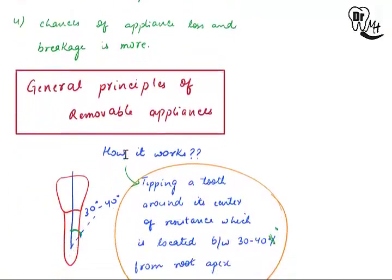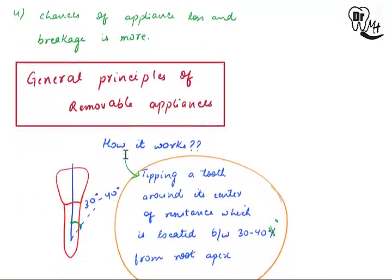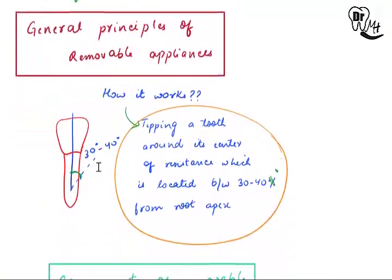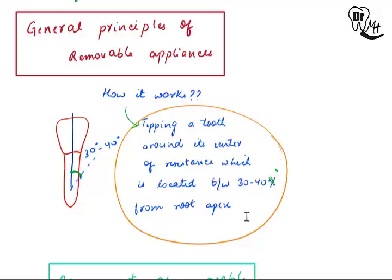Regarding the general principles of removable appliances and how they work: they work by tipping a tooth around its center of resistance, which is located between 30 to 40 degrees from the root apex.